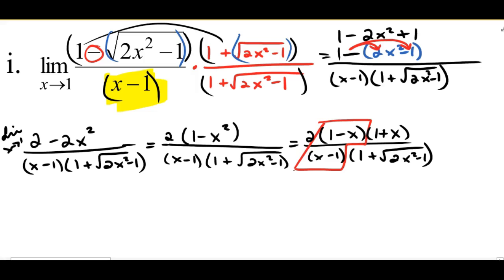There are two ways to handle this. I could factor a negative 1 out of (1 minus X) — that changes the signs inside, making it negative (X minus 1) — or I can use the shortcut: when I have two binomials to cancel whose signs are exactly opposite, I can cancel them out and write a negative 1 to be left behind. Either way, I've canceled out that troublesome X minus 1.